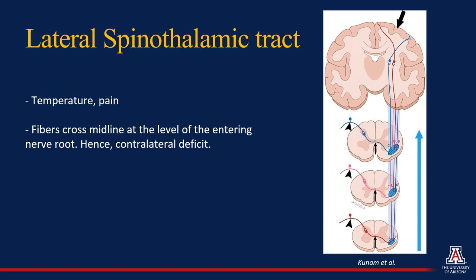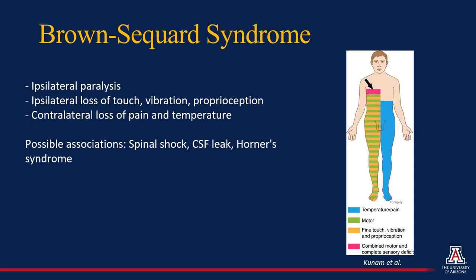The lateral spinothalamic tract communicates fibers related to temperature and pain sensation. These fibers are different from the prior two tracts in that they cross midline at the level of the entering nerve root. Therefore, if they are transected within the cord, the deficit will be on the contralateral side. These three tracts are responsible for the clinical syndrome of Brown-Séquard syndrome.